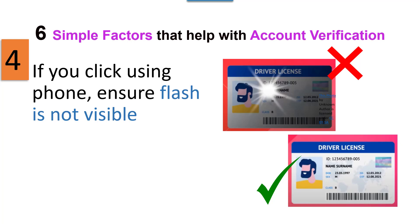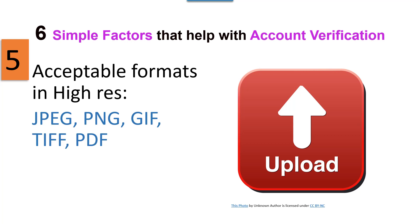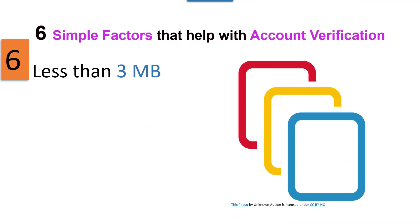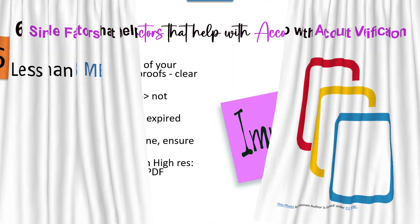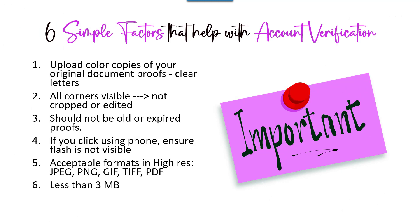If you photograph your ID with a phone, make sure the flash is not visible on your card. If the card is laminated and reflective, the flash can hide your name or other details and cause delays. Acceptable file formats for uploads are JPEG, PNG, GIF, TIFF, and PDF, in high resolution with a maximum file size of 3 megabytes.